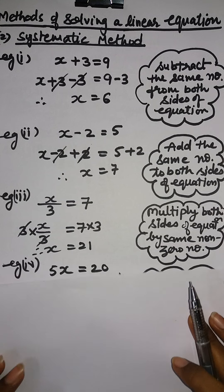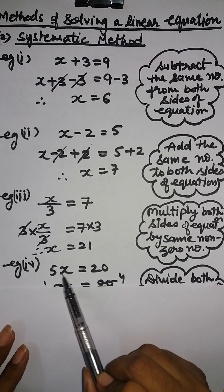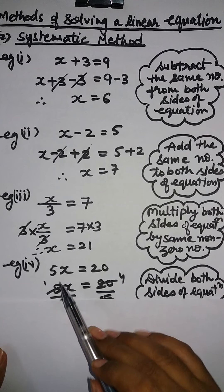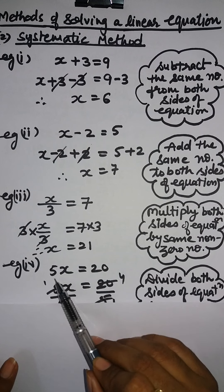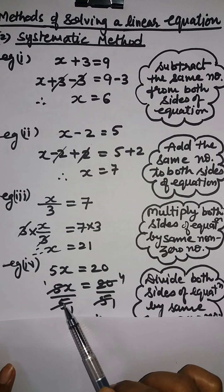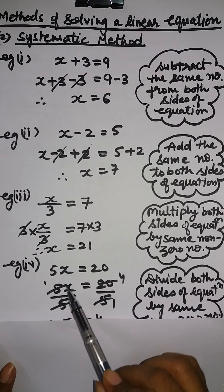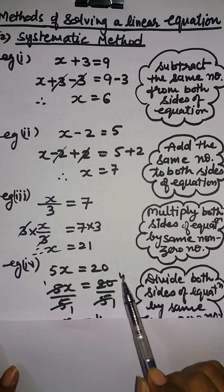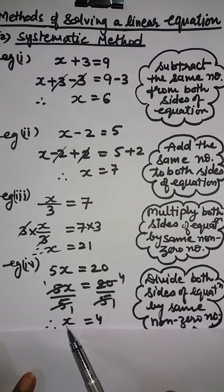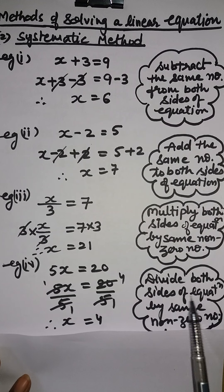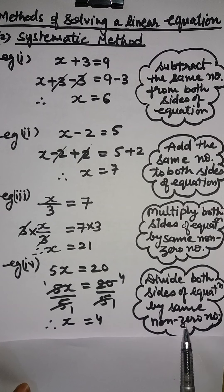Let us take another example: 5x equals 20. To remove the 5 from the left side, we divide both sides by 5. The 5 cancels out and we get x equals 4. So: divide both sides of the equation by the same non-zero number.